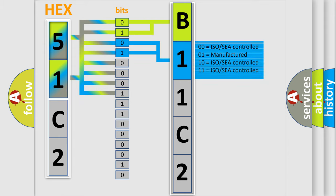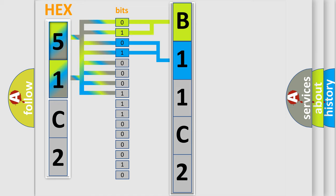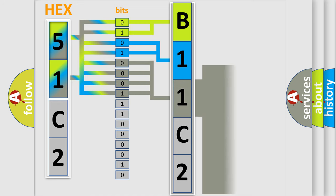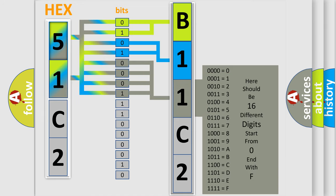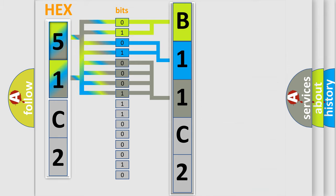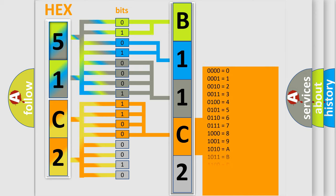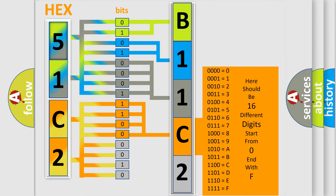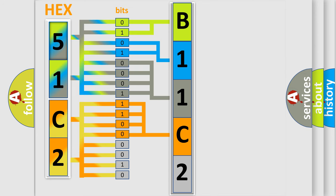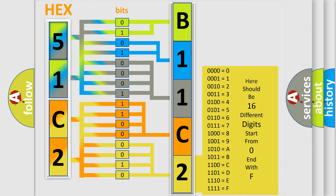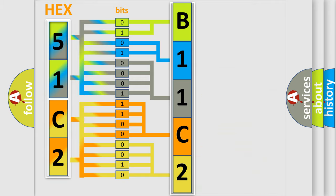A single byte conceals 256 possible combinations. We now know in what way the diagnostic tool translates the received information into a more comprehensible format. The number itself does not make sense if we cannot assign information about what it actually expresses. So, what does the diagnostic trouble code B11C212 interpret specifically for Chrysler car manufacturers?